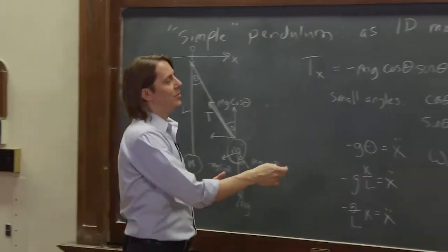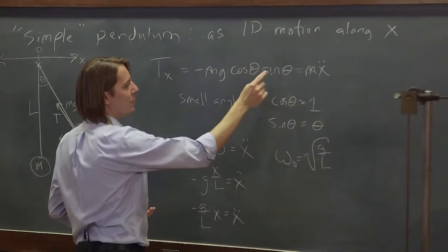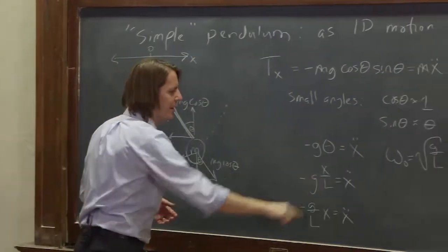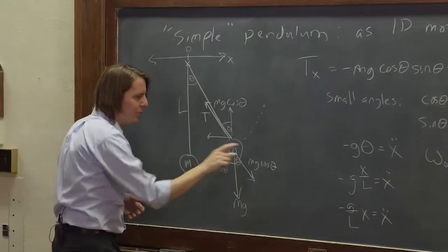So to do it this way, lots of approximations. You know, we could have expanded cosine to show that it's 1. We could have expanded sine to show that it's theta. And even this theta as x over l is an approximation, because really, x over l is telling you this sort of arc length here.